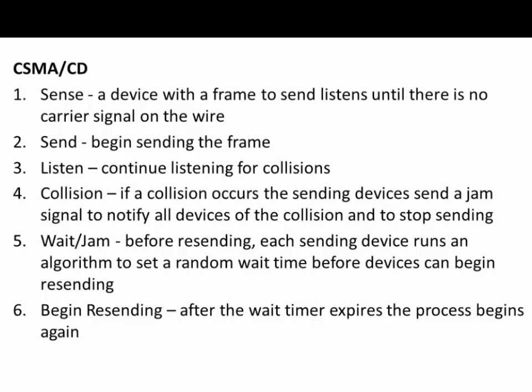Step two: begin sending the frame. If the device doesn't sense any carrier signal on the wire, it can begin sending. It continues to listen while sending for collisions. A collision happens when two devices on the network try to send at the same time. If a collision occurs, the sending devices send a jam signal to notify all other devices on the network of the collision and to stop sending.